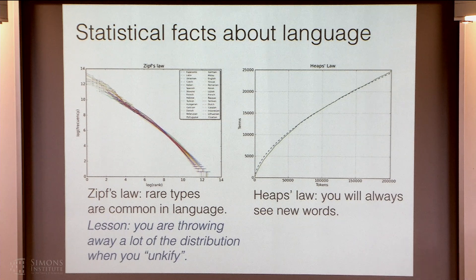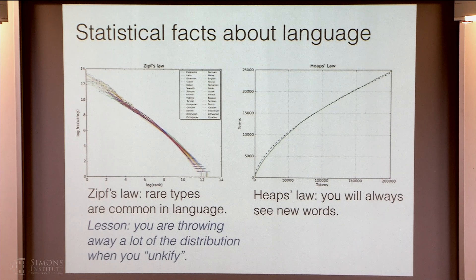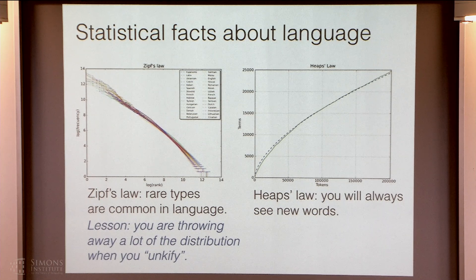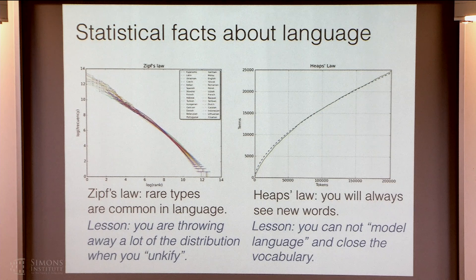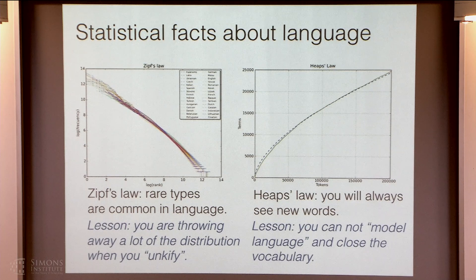Another way of stating this is sometimes called Heap's law, from the information retrieval community. It basically shows that in any corpus, as you add more and more documents to it, you're going to see more and more unique types. Both of these are nice simple curves that characterize these things. The takeaway is: you cannot model language with a closed vocabulary. You can model something language-ish, but you're missing these really robust, important aspects of language.